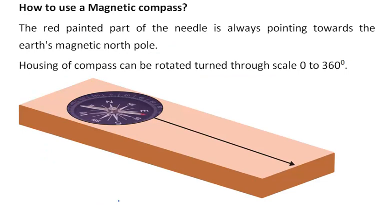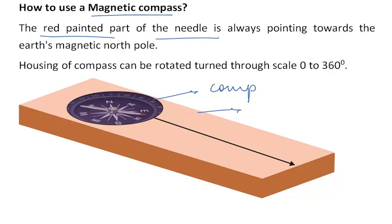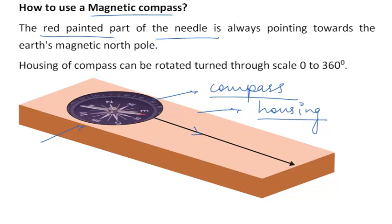Now let us discuss how to use a magnetic compass for finding direction. We know that the red painted part of the needle always points towards the north. Here you see a wooden housing in which there is a magnetic compass fitted. This housing has a circular portion in which the compass is fitted, and it also has one particular direction line. The housing of the compass can be rotated through a scale of 0 to 360 degrees.